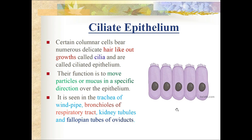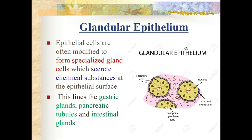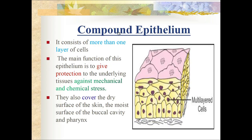Ciliated epithelium is also found in kidney tubules and fallopian tubes. Glandular epithelium: epithelial cells are often modified to form specialized glands that secrete chemical substances at the epithelial surface. This lines the gastric glands, pancreatic ducts, and intestinal glands. Compound epithelium consists of more than one layer of cells and its main function is protection against mechanical and chemical stress. It covers the dry surface of the skin and moist surfaces of the buccal cavity and pharynx.